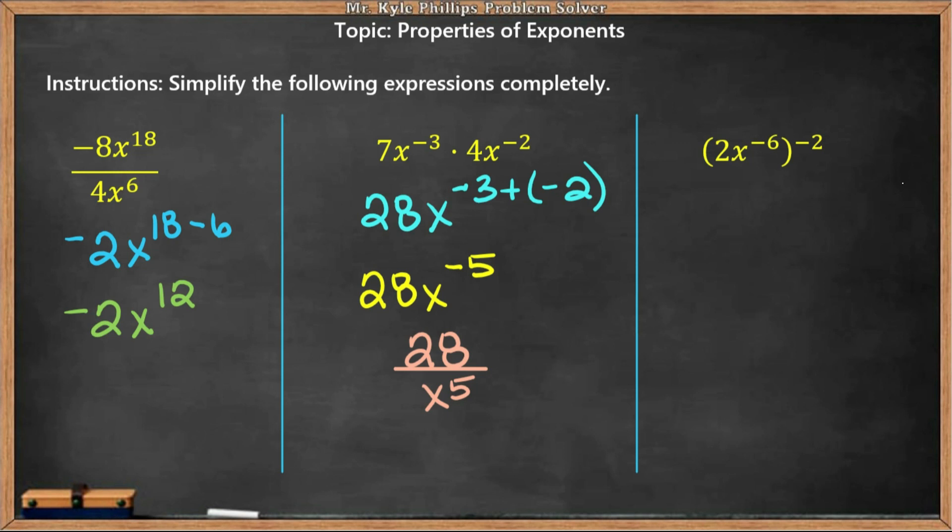So here we have 2 to the -2, and here we have x to the -6 times -2. So this is going to give us 2 to the -2 and then x to the 12.